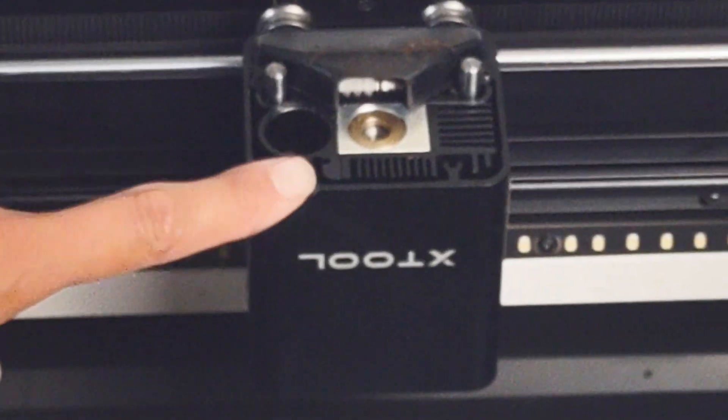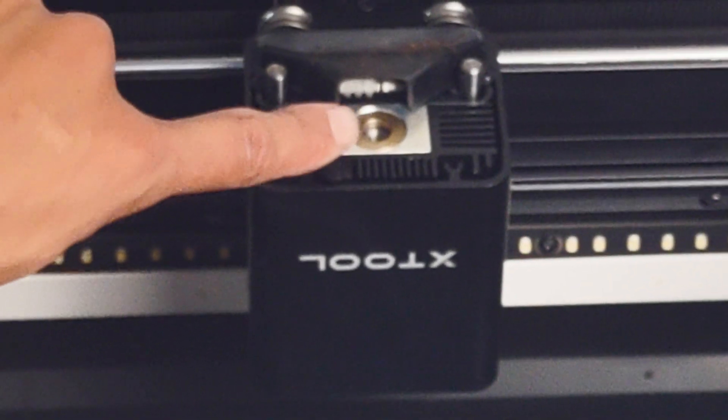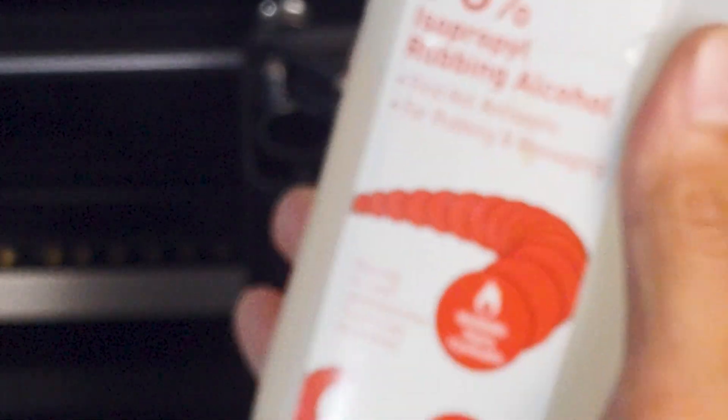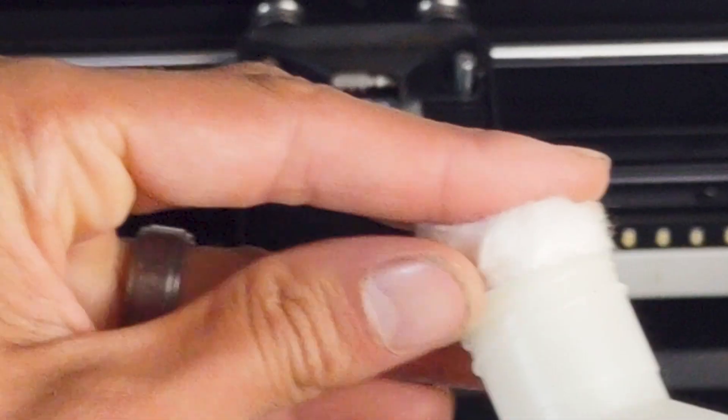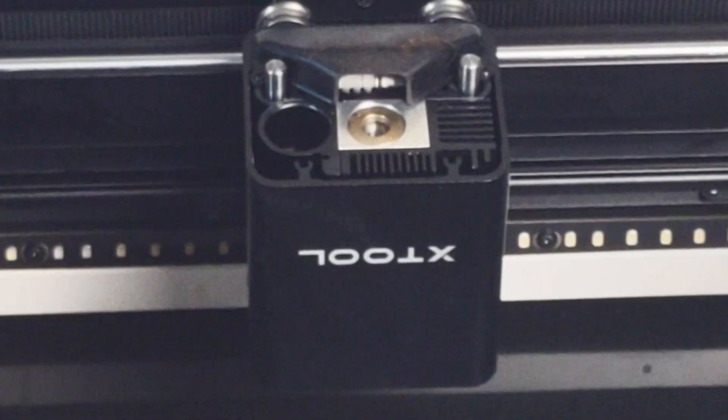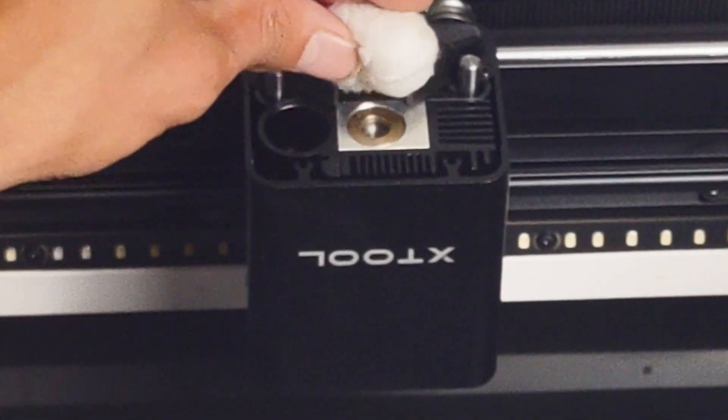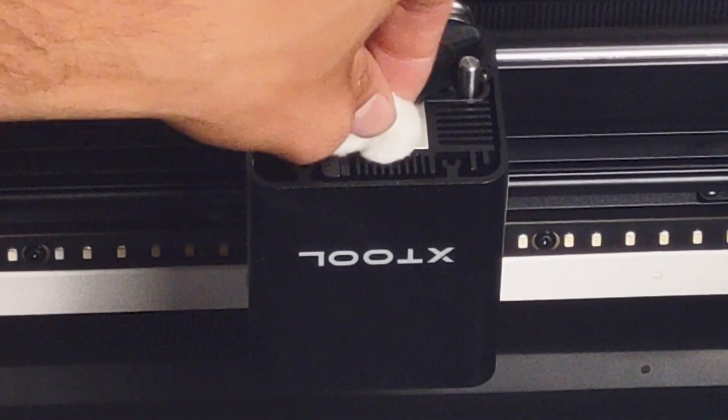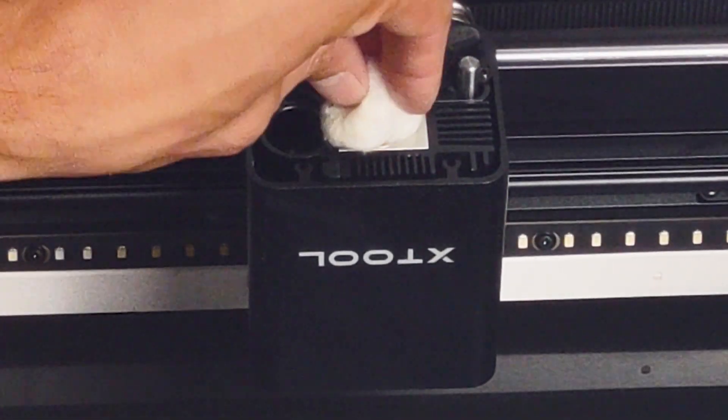I actually never use that part. I'm really just interested in the laser for the X-Tool, but we're taking that little brass ring out. And before we do that, let's go ahead and clean the lens real quick because we're here, it's accessible, might as well. So I like to use a cotton ball and just kind of push it down into where the lens is and give a gentle turn, but you can use a Q-tip if you want to, or a cotton swab, whatever you want to call it.